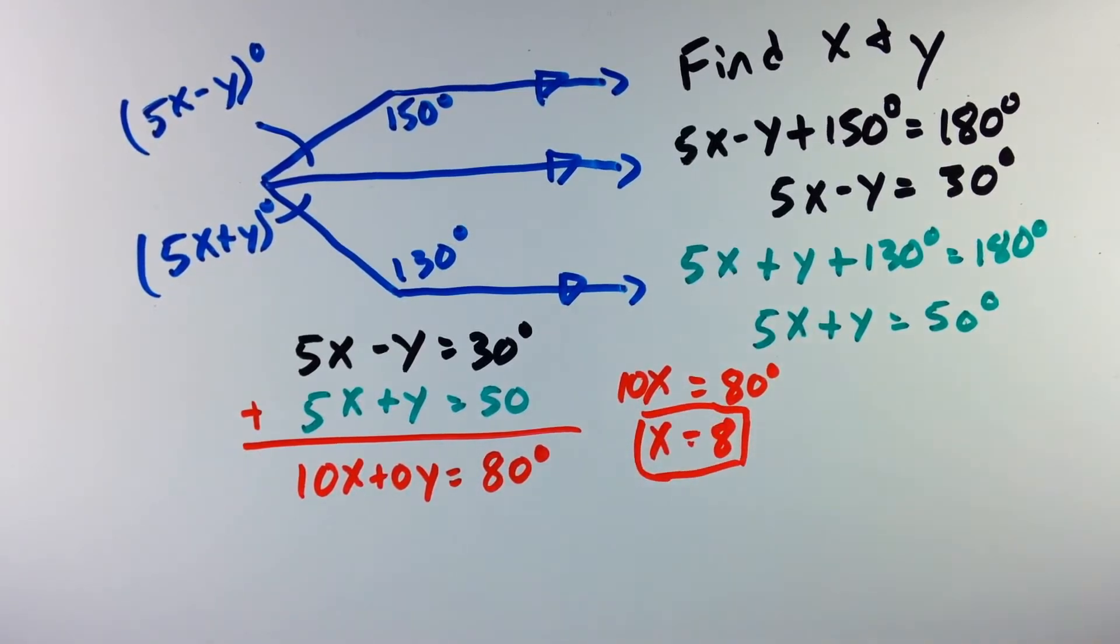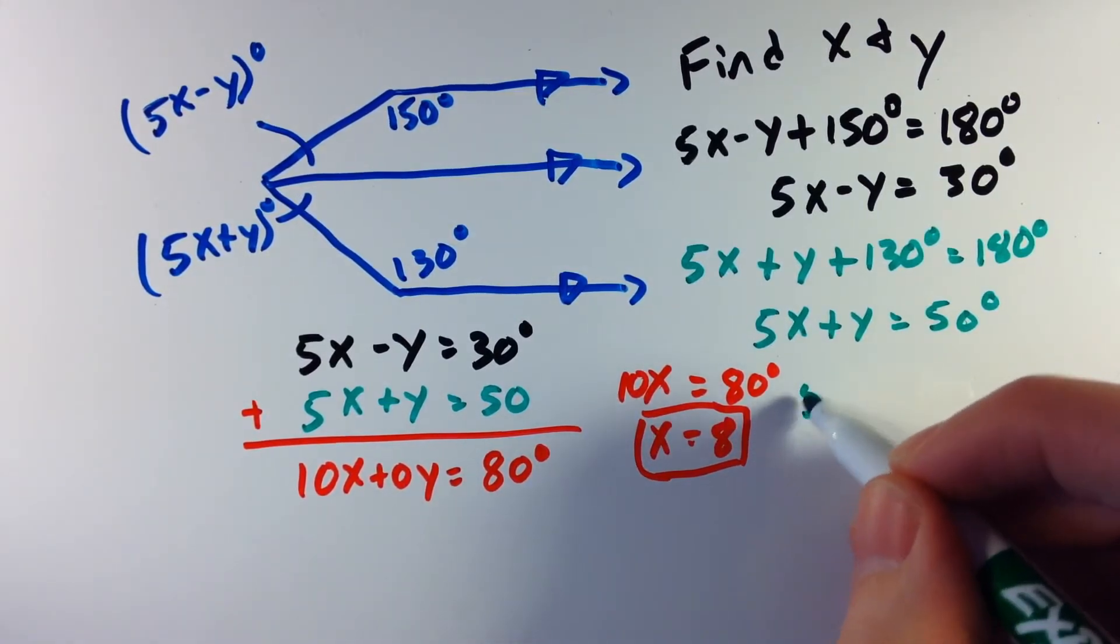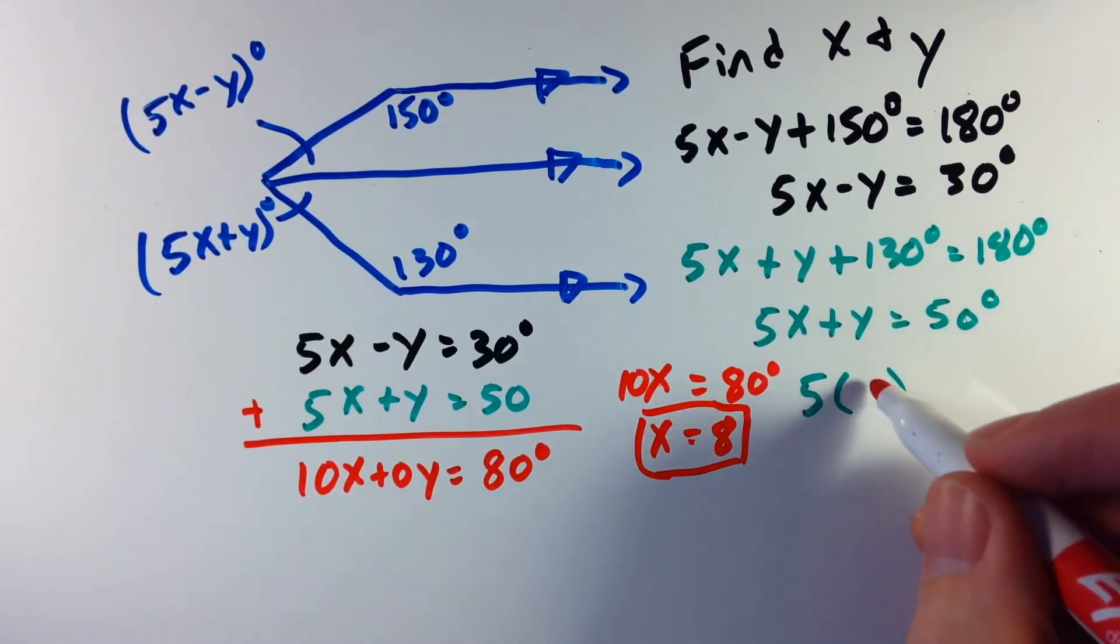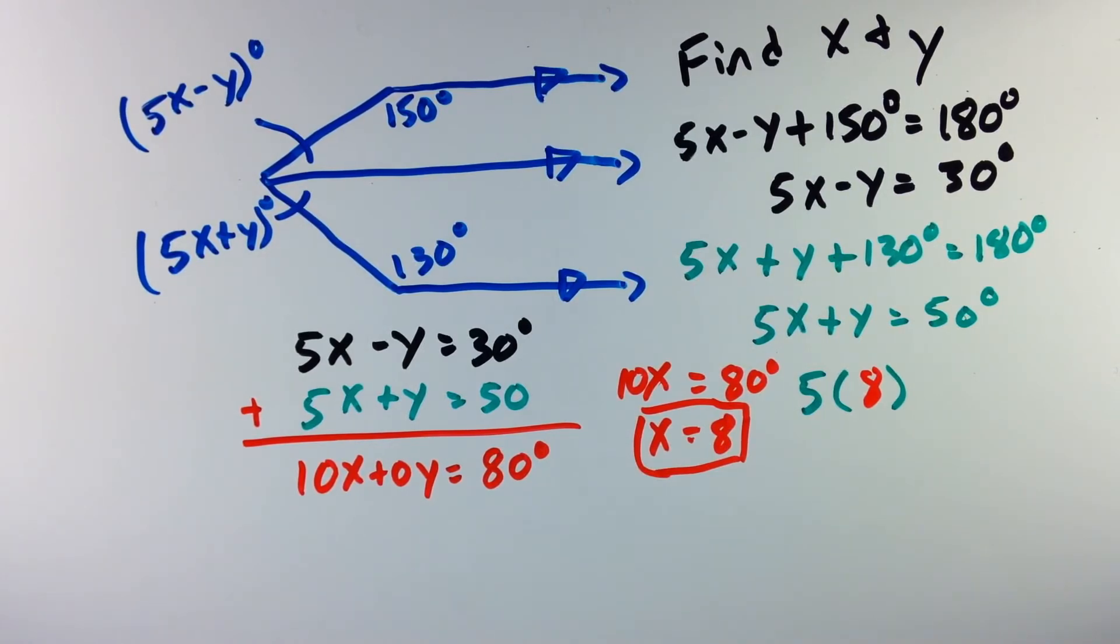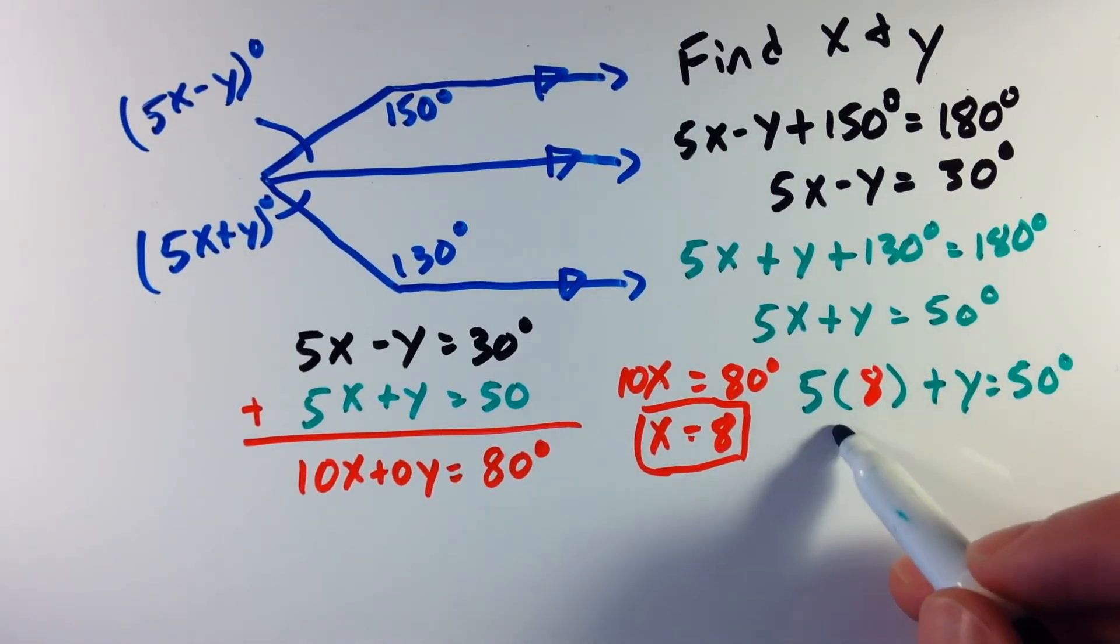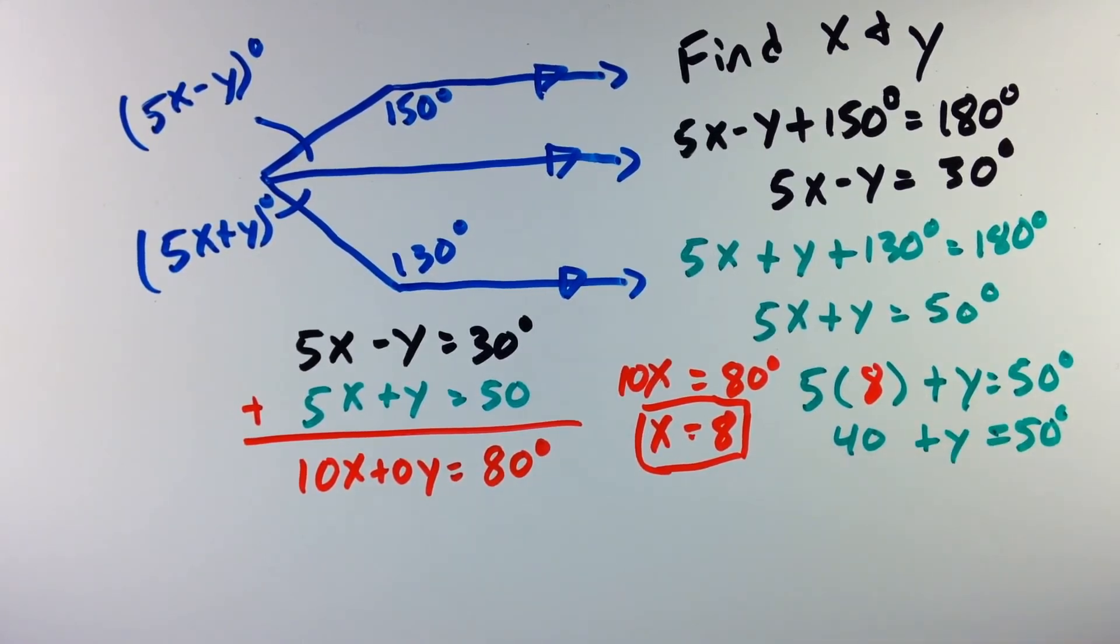So now I am almost there. I got halfway, I'm halfway there. I have x equals 8, and I need to take that equation and plug it back into one of our previous equations that we found to get our y. Since this equation is sitting right here, let's plug it into that one. So we can do 5 times the value of x that we found, which is 8, plus y equals 50. 5 times 8 is 40. And then we subtract the 40 from both sides, and we get y equals 10. So our two values for x and y would be 8 and 10.